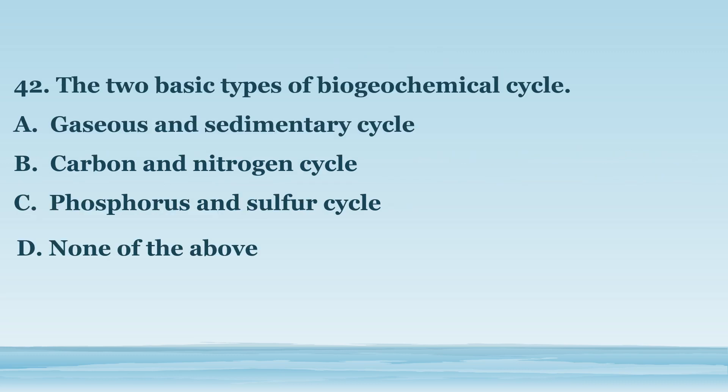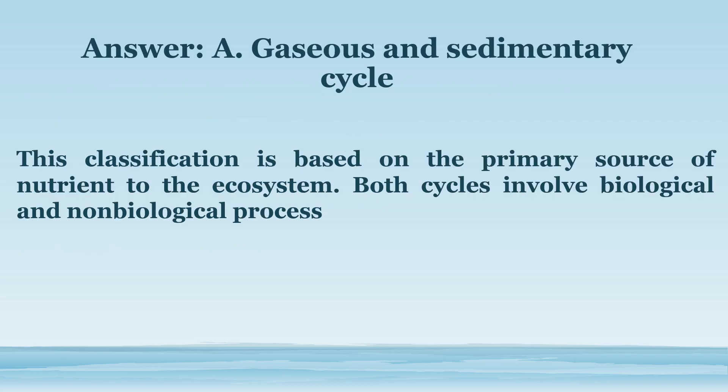Number 42. The two basic types of biogeochemical cycle. A. Gaseous and sedimentary cycle. B. Carbon and nitrogen cycle. C. Phosphorus and sulfur cycle. D. None of the above. The answer is letter A. Gaseous and sedimentary cycle. This classification is based on the primary source of nutrient to the ecosystem. Both cycles involve biological and non-biological processes.